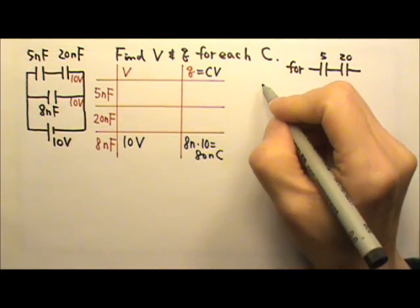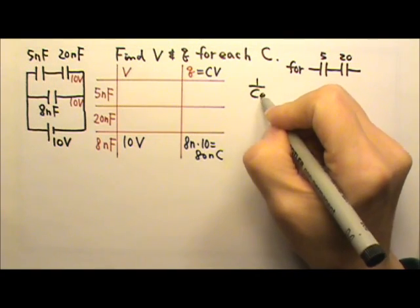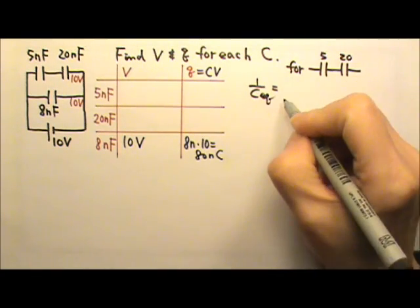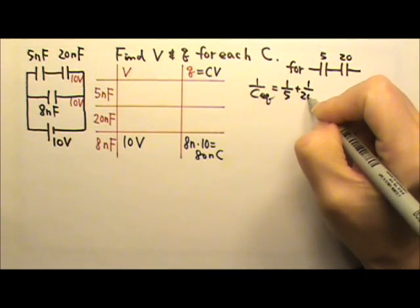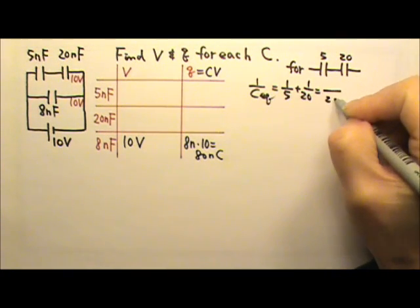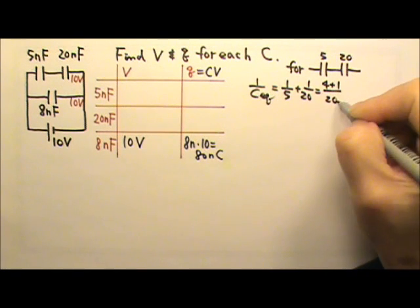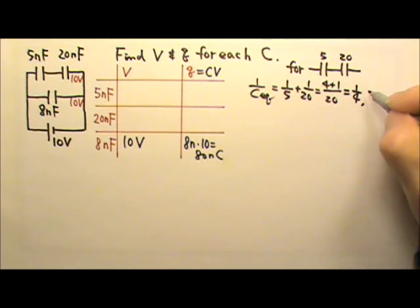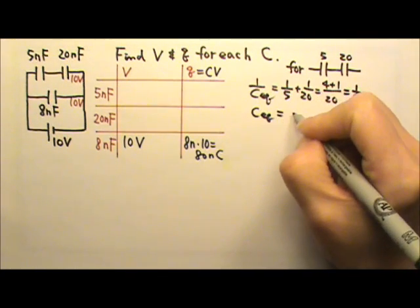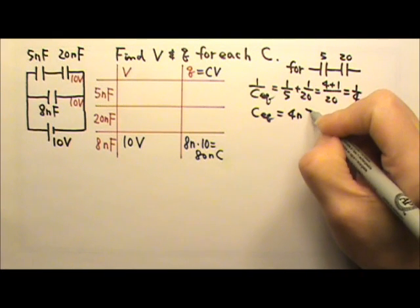For these two in series, we can use the 1 over equation to find the equivalent capacitance. 1 over 5 plus 1 over 20, which equals 4 plus 1 divided by 20, which is 1 fourth. That means we flip these two over. The equivalent capacitance is 4 nanofarad.